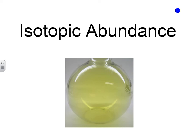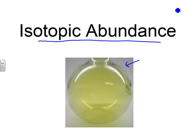This is video 3 of unit 1, and in this video we'll talk about isotopic abundance. What you have here is a flask of the element chlorine, and the question is, how many different chlorine atoms are in there? All of the atoms in here are chlorine, but remember that chlorine can come in the form of different isotopes.